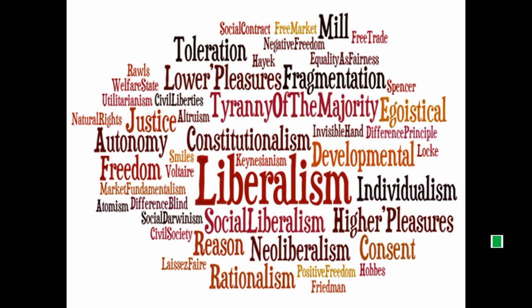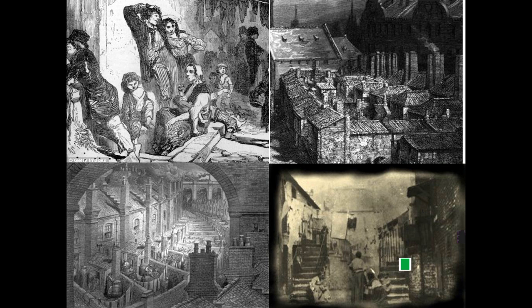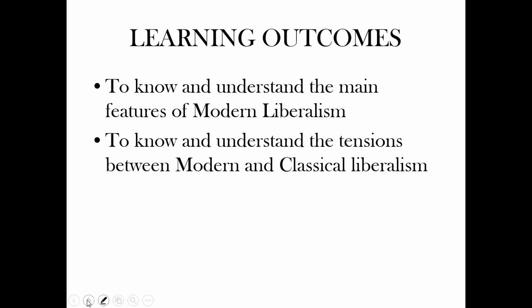Despite the undoubted economic and political success of classical liberalism, this success had also brought with it huge inequalities in wealth and extreme poverty for many people. This led to criticism of the classical liberal approach and a re-examination — or more correctly a re-interpretation — of the core themes of liberalism, and this re-interpretation is known as modern or social liberalism. By the end of this video we will have recapped on the main features of modern liberalism and will revisit the tensions between modern and classical liberalism.